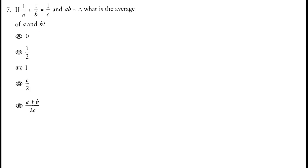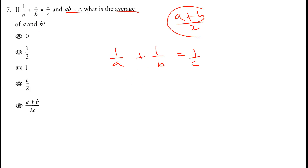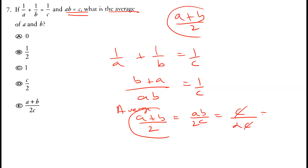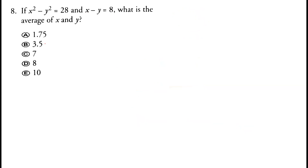If 1 over a plus 1 over b equals 1 over c and ab equals c, what is the average of a and b? Taking ab as the LCM: (b plus a) over ab equals 1 over c, so a plus b equals ab over c. Dividing by 2 gives the average. Since ab equals c, we get c over 2c, and the c's cancel, giving 1 over 2. Option B is correct.